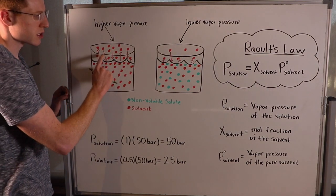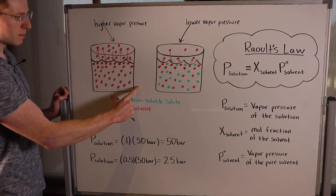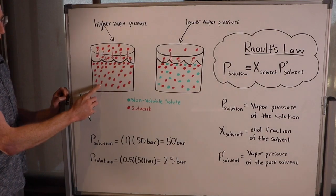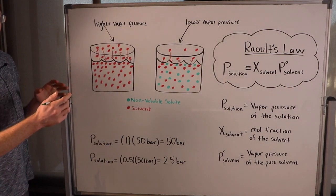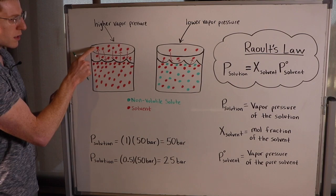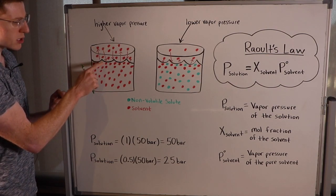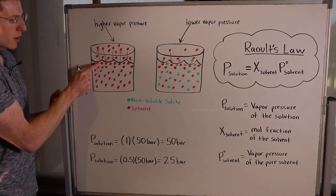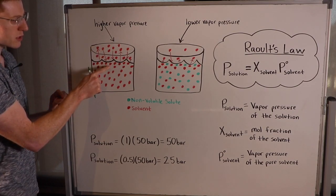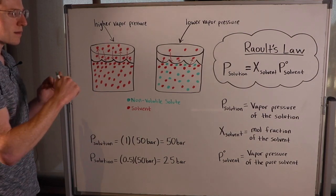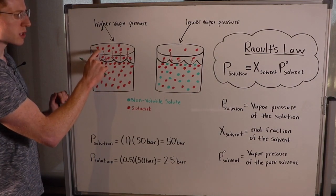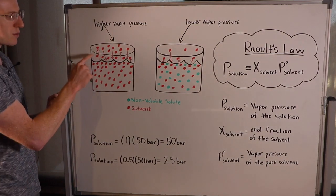Vapor pressure is a pressure that is present at the surface of a liquid. Here I've drawn a beaker full of liquid, and the surface is represented by a black wavy line. The red dots represent individual molecules of the liquid. Some red dots are leaving the liquid — that's evaporation — while others return from the vapor back into the liquid — that's condensation. This happens many times per second, and all of this bouncing around of molecules creates a pressure we call the vapor pressure.